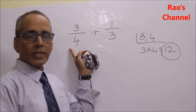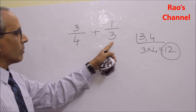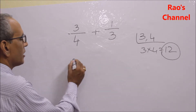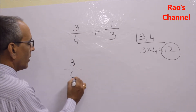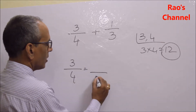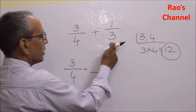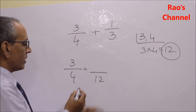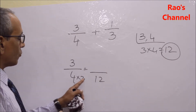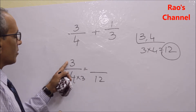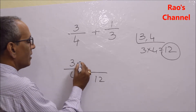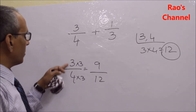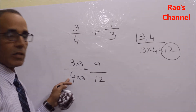We want 12 as the denominator in both cases. For 3 by 4, I need to write an equivalent fraction with denominator 12. Since I multiply the denominator 4 by 3 to get 12, I also multiply the numerator by 3, giving 9 by 12. So 3 by 4 equals 9 by 12.